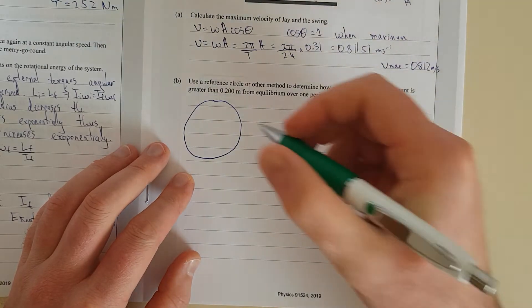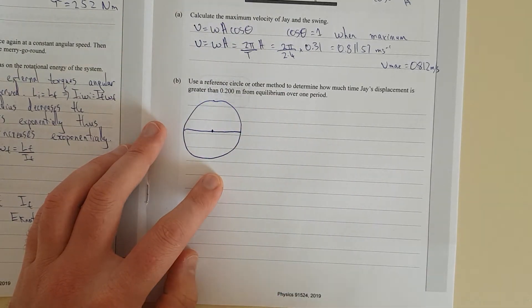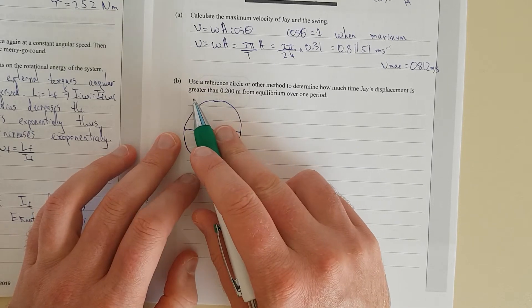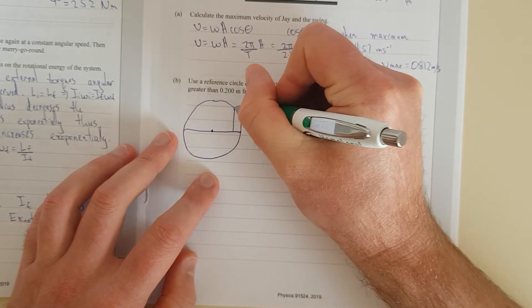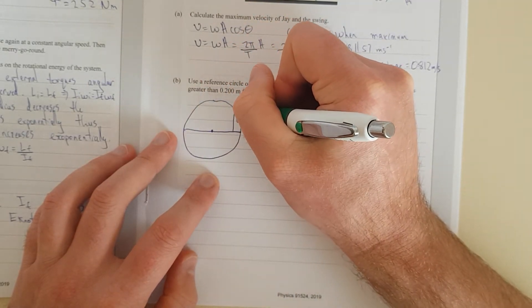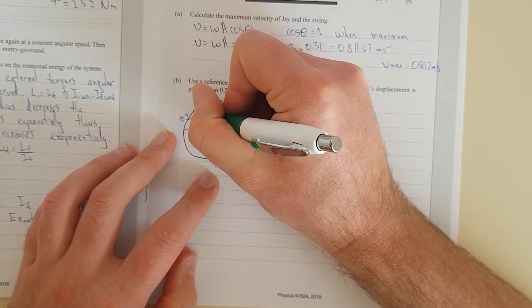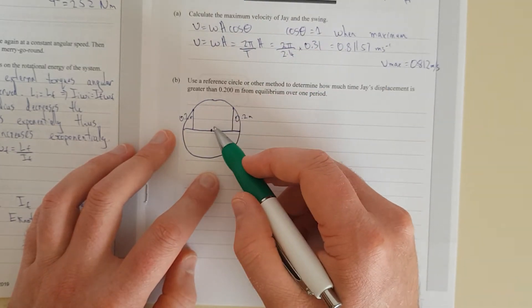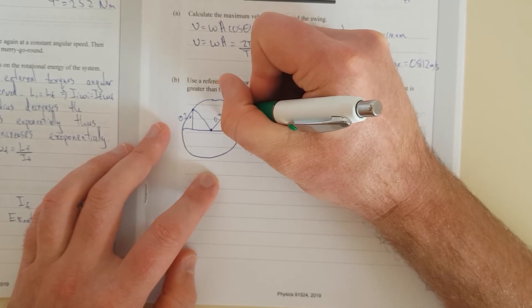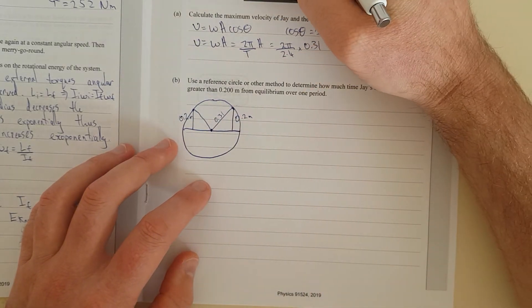So I'm going to draw my phasor diagram. Here's my reference circle. Here's my equilibrium position. Here's my center. And I'm assuming it's going to start from this side and move up. I'm just used to polar coordinates. Polar coordinates always start from here and then work that way anti-clockwise. So, essentially, here would be this point here would be 0.2 meters above equilibrium. So, here we're starting at the center, then we go up to 0.2. Here would be, obviously, 0.31. And then exactly symmetrical over here would be 0.2. And just remember, the radius of our circle, of our phasor diagram, is always the amplitude. It's always 0.31.